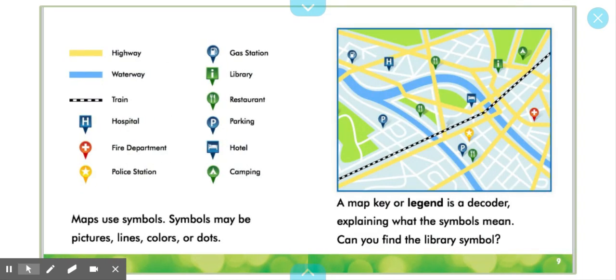Map Symbols. Maps use symbols. Symbols may be pictures, lines, colors, or dots. A map key or legend is a decoder explaining what the symbols mean. Can you find the library symbol?